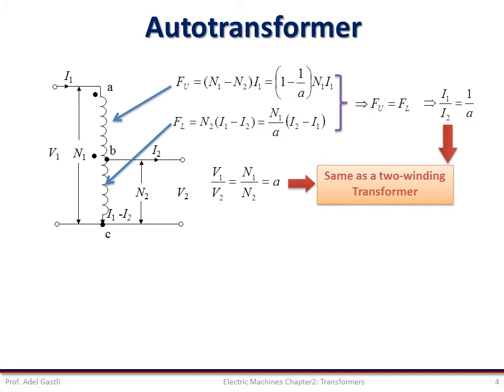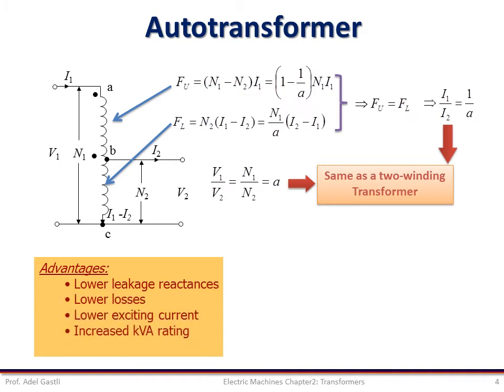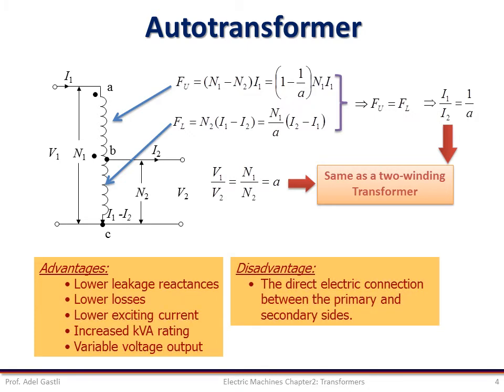So, the advantages of an autotransformer connection are lower leakage reactance, lower losses, lower exciting current, increased KVA rating, and variable output voltage when a sliding contact is used for the secondary. But its disadvantage is the direct connection between the primary and secondary sides.